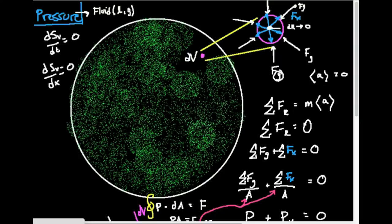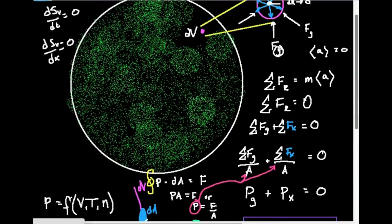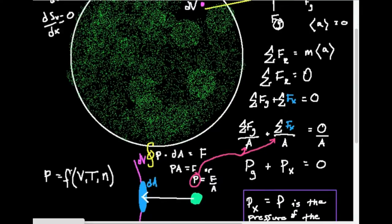The sum of forces equals M times average acceleration. We know gas molecules aren't static — they're always moving — but on average through any volume, the average acceleration is zero because all acceleration vectors balance each other. So all forces should sum to zero. I add all the F-sub-g forces pointing toward the center, plus all the F-sub-x forces pointing radially away. This sum equals zero. Taking these forces and dividing by area gives force divided by area, which equals pressure.